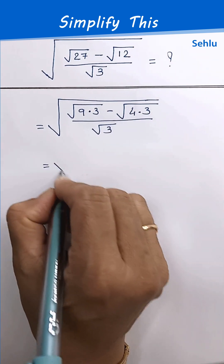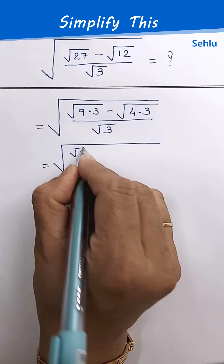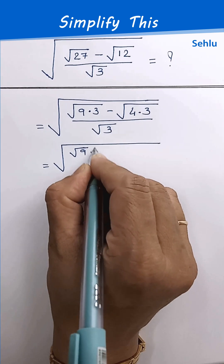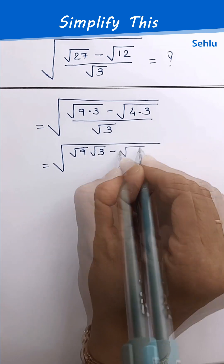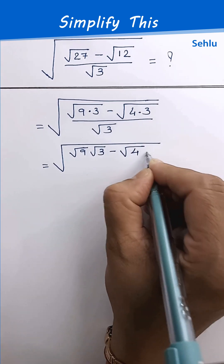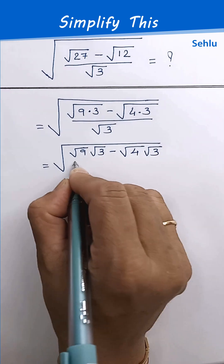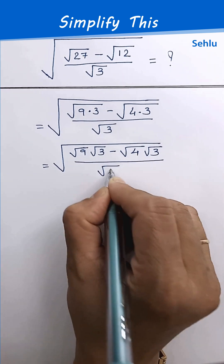Let's separate them. So it will be square root of 9 times square root of 3, minus square root of 4 times square root of 3, over square root of 3.